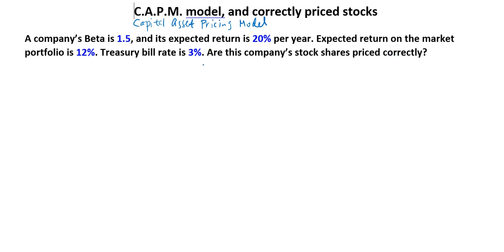In this question we are talking about the price per share of stock reflecting a combination of two things: risk and return. So the price should correctly reflect this sort of high risk, high return, low risk, low return relationship. What do we mean by risk? This is what beta reflects.